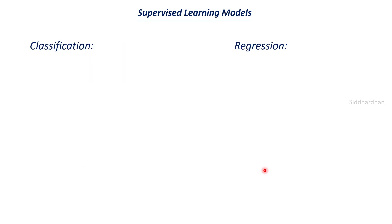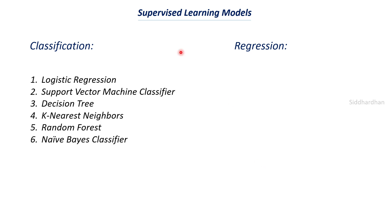Now let's look at the important supervised learning models we use regularly, starting with classification algorithms. Logistic regression is very useful for binomial classification — where we need to find two categories, such as dog or cat. Another important model is the support vector machine classifier, which builds a hyperplane to separate and classify data. We also have other models such as decision tree, K-nearest neighbor, random forest, and naive Bayes classifier. In upcoming videos we will discuss each of these models in detail.